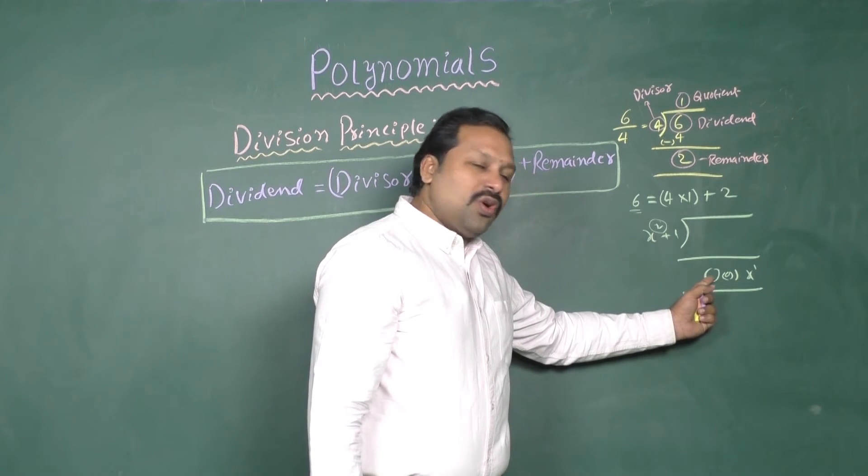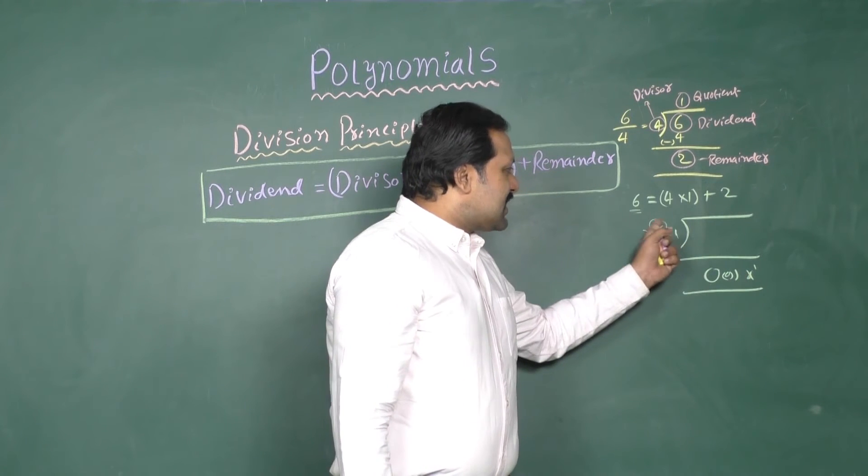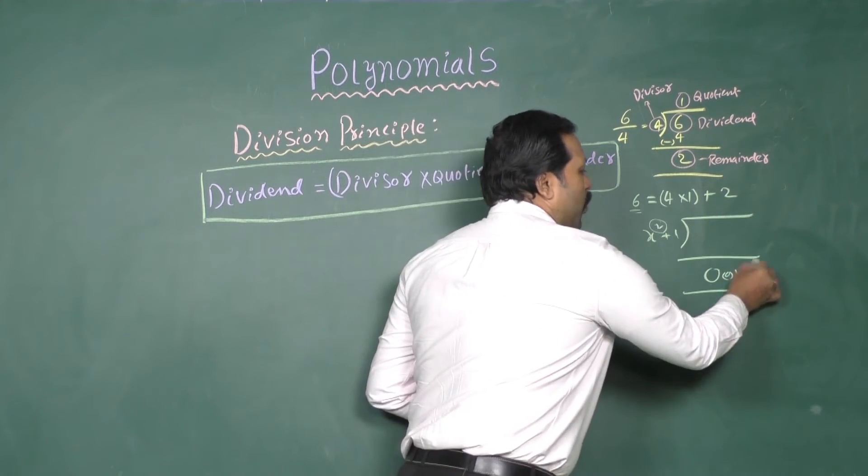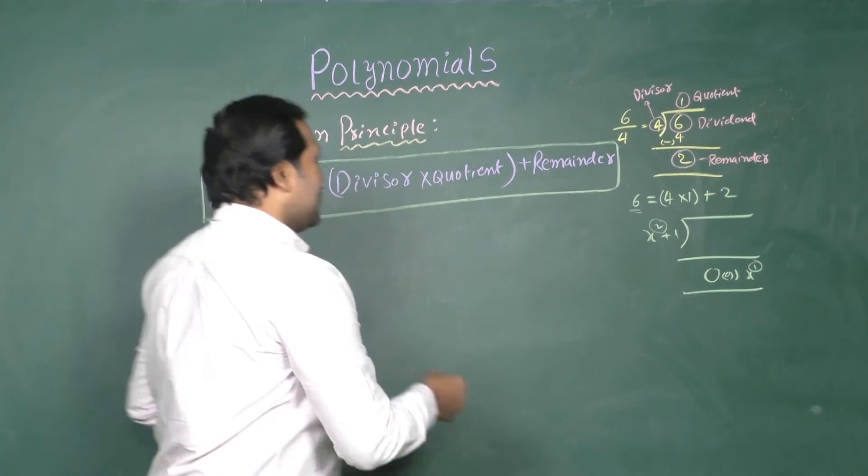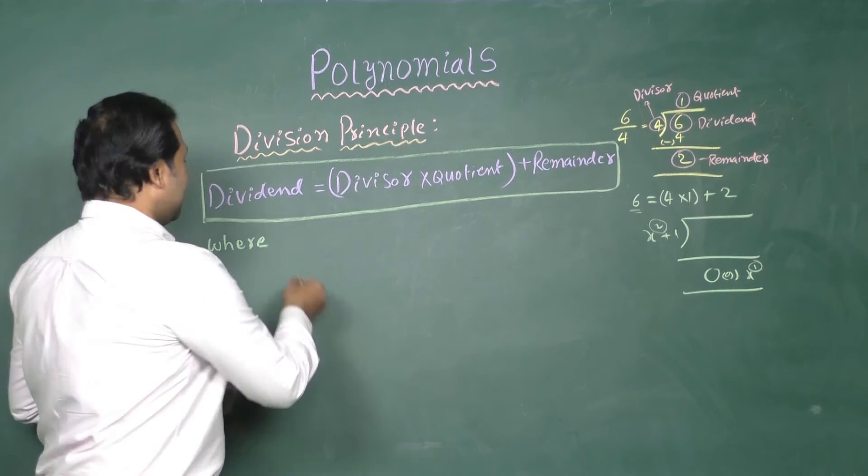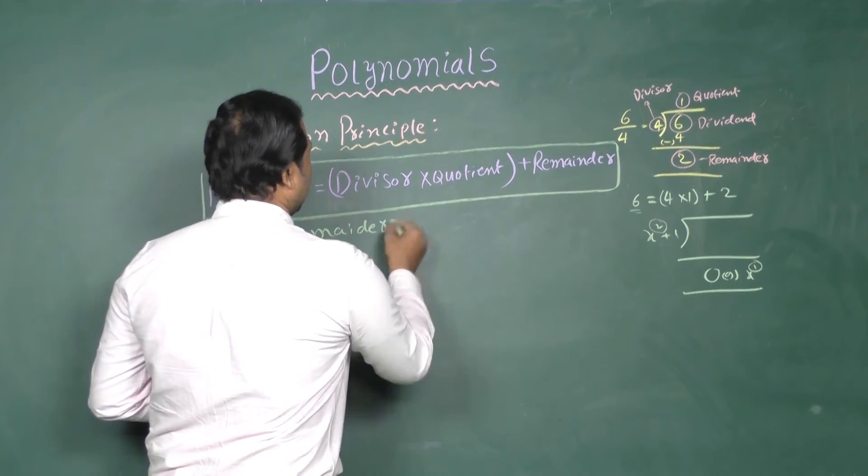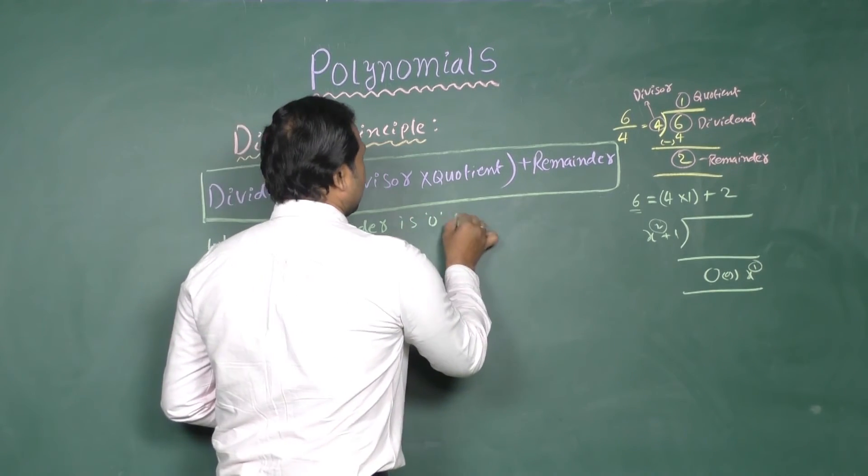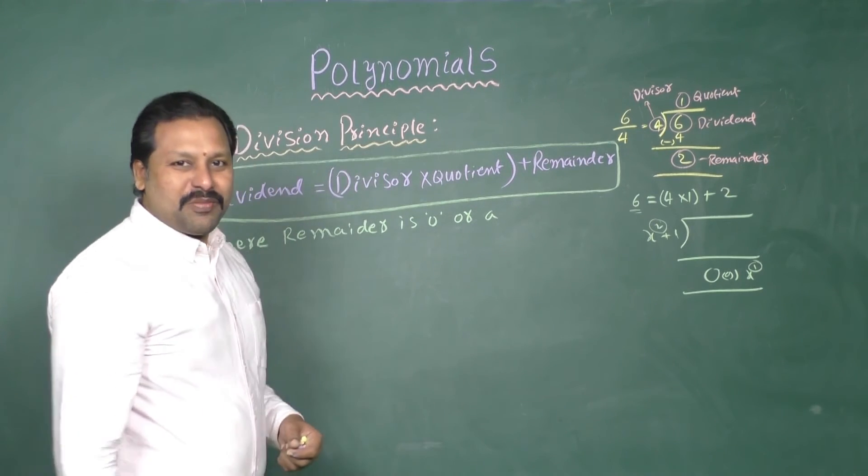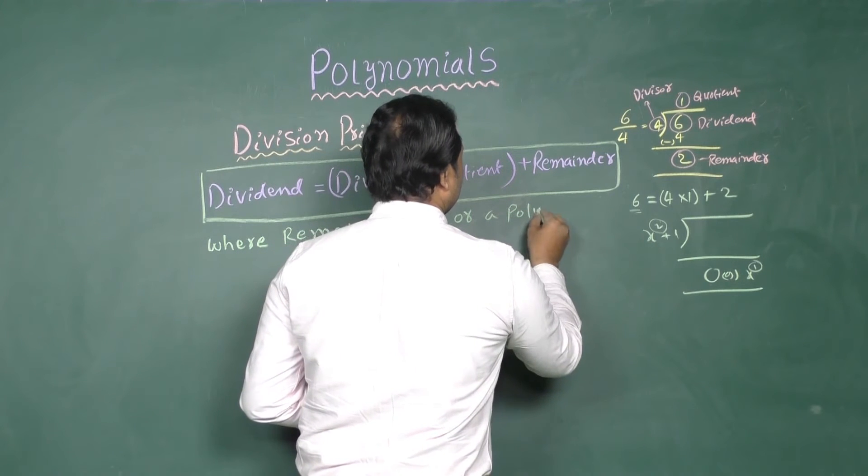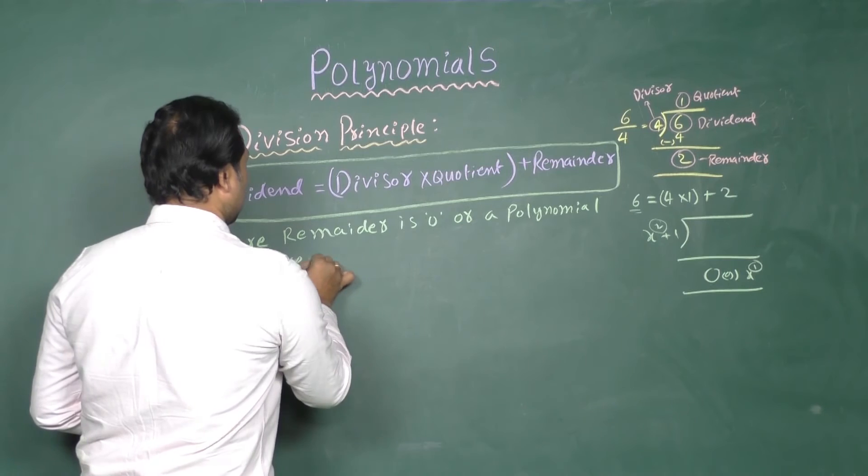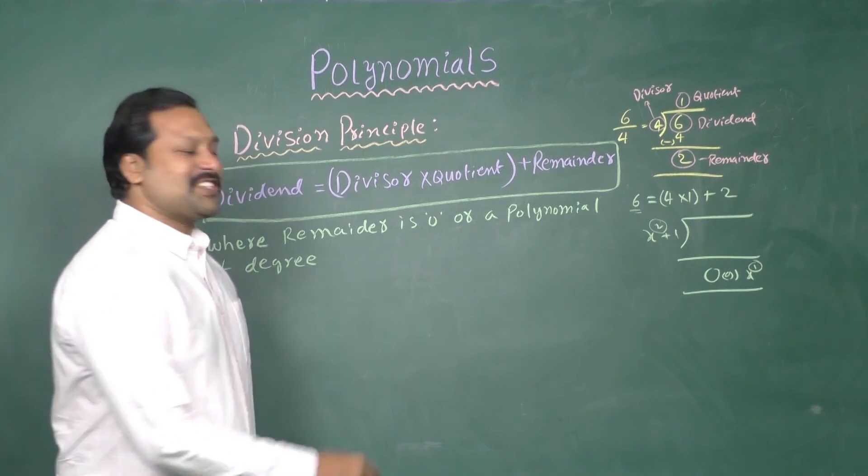Then the remainder may be 0. Otherwise, less than degree of the divisor. So, that is 1 here. Where, remainder is 0 or a polynomial of degree less than that of the divisor.